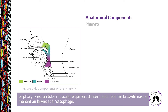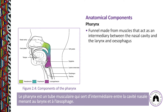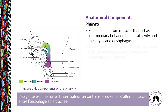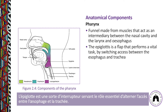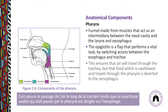The pharynx is a funnel made from muscles that acts as an intermediary between the nasal cavity, the larynx, and the esophagus. The epiglottis is a little flap that performs a vital task by switching access between the esophagus and the trachea, ensuring air travels through the trachea while food swallowed through the pharynx is diverted to the esophagus.